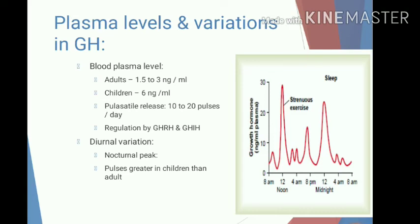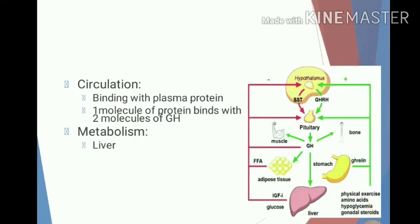Decreased growth hormone secretion with age is responsible for a decrease in lean body mass, physical fitness, protein synthesis, and metabolic rate, as well as an increase in adipose mass. Growth hormone is circulated in bound form with plasma protein — one molecule of protein binds with two molecules of growth hormone. The half-life of circulating growth hormone in humans is 0 to 20 minutes, and daily output is about 0.2 to 1 milligram per day. It is metabolized in the liver with a metabolic clearance rate of 350 liters per day, and excreted by the kidneys.